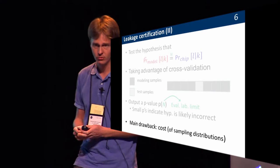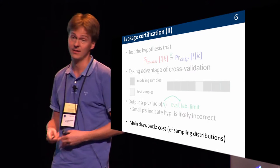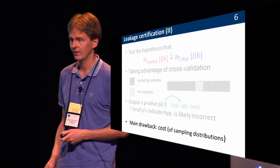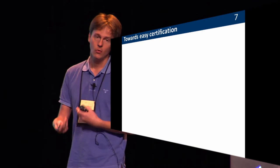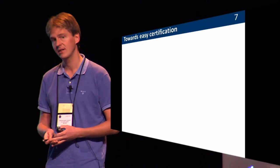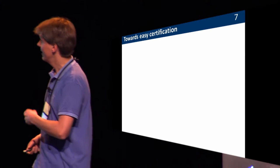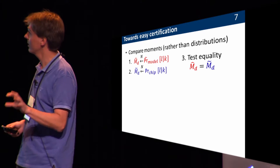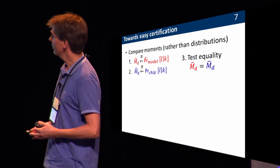There is, of course, a big drawback: this approach is extremely expensive because we need to characterize all the sampling distributions of the model, so doing it was quite long — that was the main criticism we got. So we tried to find a way to simplify this, and doing it in a completely sound manner is not very easy. Easy certification: very simply stated, the idea we wanted to use is, rather than comparing distributions — which is long and difficult — why not compare moments?